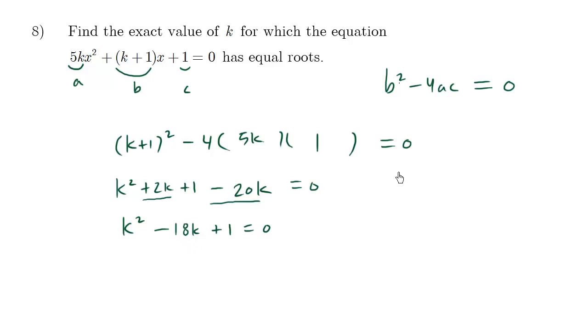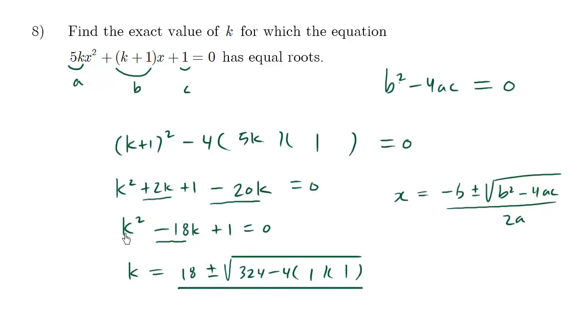Recall that x equals negative b plus minus the square root of b squared minus 4ac all over 2a. So here we want to solve for k, so we're going to say that k equals negative b. Here's our b value so negative negative 18 becomes positive 18, plus minus the square root of b squared. Negative 18 squared is 18 times 18 which is 324 minus 4ac. A here is 1 and our c value is also 1, all over 2a. Our a value here is 1 so 2 times 1 is 2.